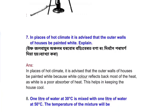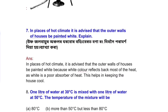In places of hot climate, it is advised that the outer walls of houses be painted white. White color reflects back most of the heat, as white is a poor absorber of heat. This helps in keeping the house cool.